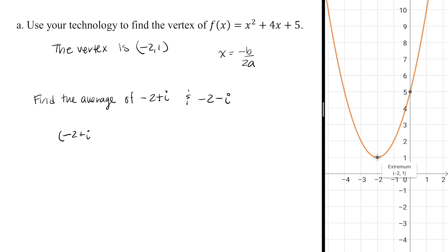So negative 2 plus i plus negative 2 minus i. And this whole quantity divided by 2. The parentheses are not needed, but are there just to show you that this is one quantity and this is another. Now I'm going to combine like terms. Negative 2 minus 2 plus i minus i divided by 2. i minus i equals 0, so these go away. And I end up with negative 4 over 2 or negative 2. And this is the same x value here.